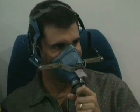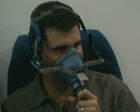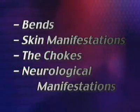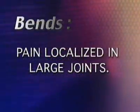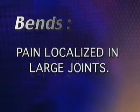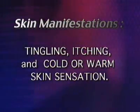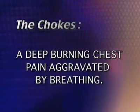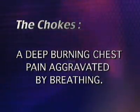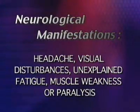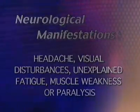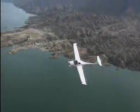Decompression sickness, also referred to as DCS, occurs when the body is exposed to decreased barometric pressure and the nitrogen dissolved in the body comes out of solution and forms bubbles. There are four types of DCS: the bends, pain localized in large joints; skin manifestations, including tingling, itching, and cold or warm skin sensation; the chokes, a deep burning chest pain aggravated by breathing; and neurological manifestations, including headache, visual disturbances, unexplained fatigue, muscle weakness, or paralysis.